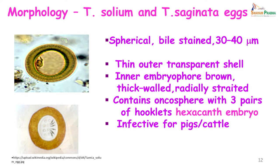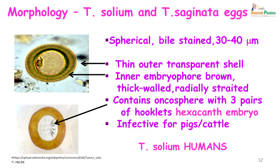The eggs are the same for Taenia saginata and Taenia solium, though in Taenia saginata they may be slightly ovoid in shape. The eggs are bile-stained, 30 to 40 micrometers in size, and have a thin outer transparent shell. There is an inner embryophore which is brown, thick-walled and radially striated, and it contains an oncosphere with 3 pairs of hooklets — therefore referred to as a hexacanth embryo. This is infective for pigs in the case of Taenia solium, cattle in the case of Taenia saginata, and also man in the case of Taenia solium.